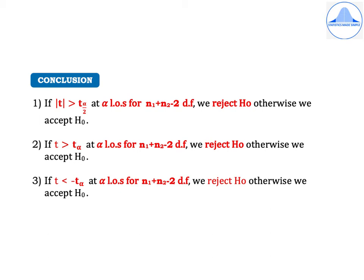For a right-tailed test, if T > T(α) at the α level of significance for N1 + N2 − 2 degrees of freedom, we reject H0; otherwise we accept H0. For a left-tailed test, the same critical value T(α) applies with the same degrees of freedom.